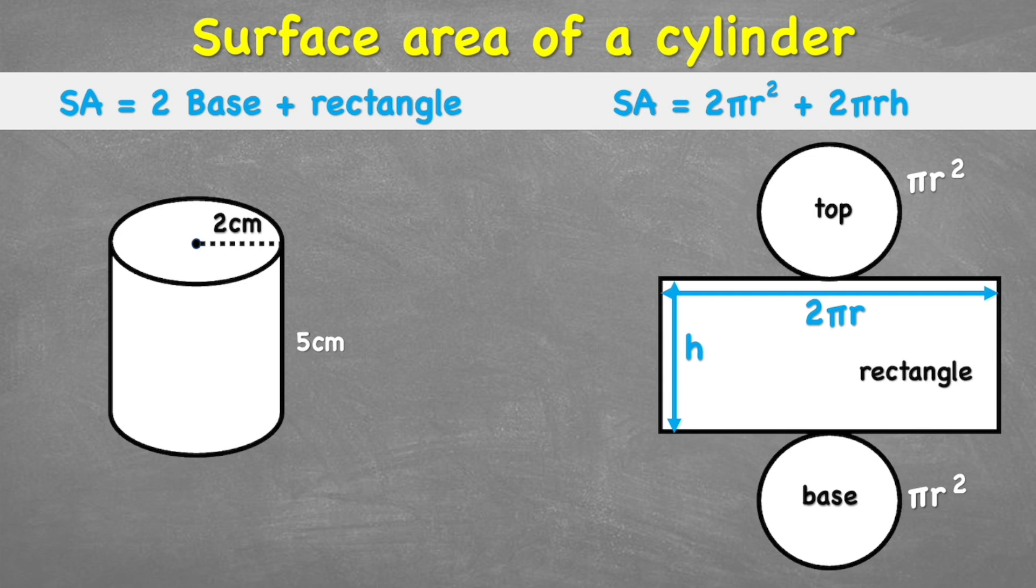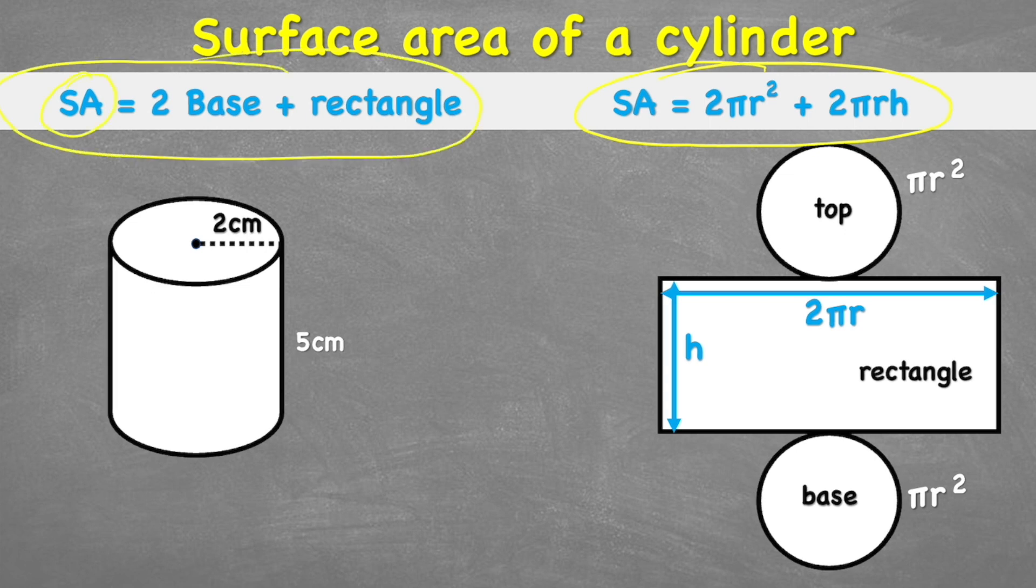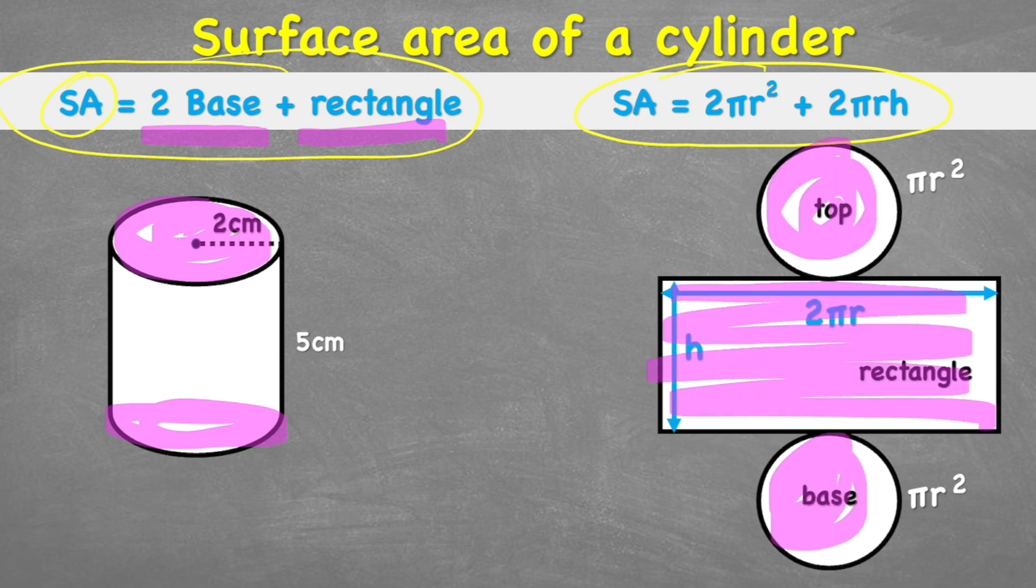And we're going to look at two formulas today. This one on the right is our official formula, but this on the left explains what we're doing. Essentially, to get the total surface area, we're going to measure 2 times the area of the base, because we've got a top and a bottom. So we'll measure two of them, and then add that to the one rectangle. That's quite obvious when we look at our net. We have the top and the base, and then we have the one rectangle as well.